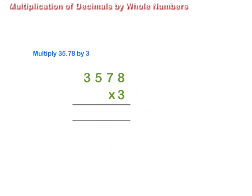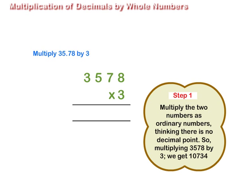Let us multiply 35.78 by 3. Step 1: Multiply the two numbers as ordinary numbers, thinking there is no decimal point. So, multiplying 35.78 by 3, we get 10,734.